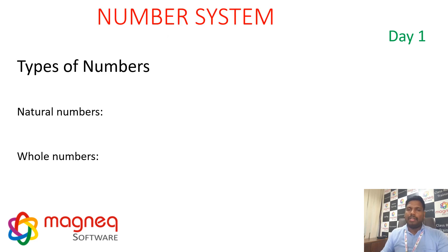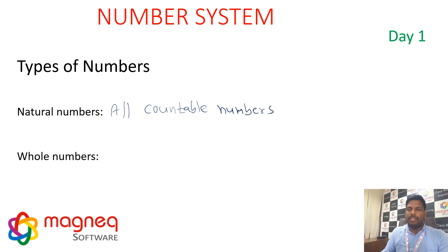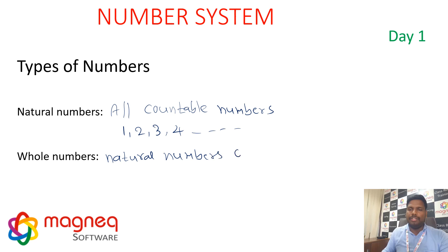Coming to the topic — types of numbers. Natural numbers: all countable numbers, starting from 1. Counting always starts from 1. Next, whole numbers: natural numbers with 0, starting from 0.